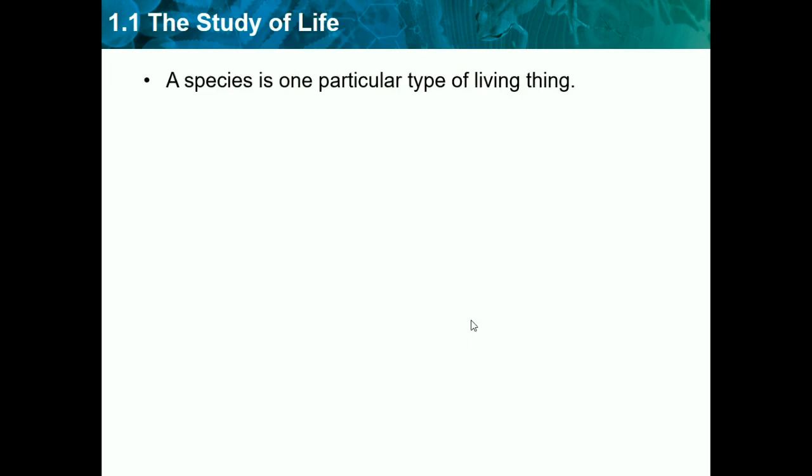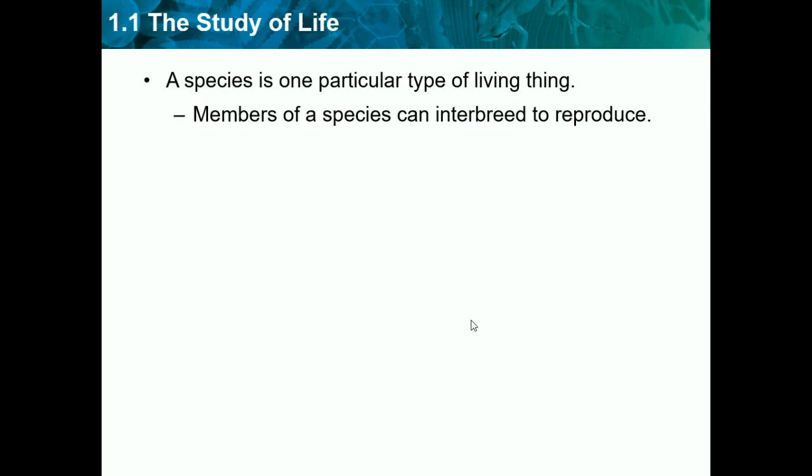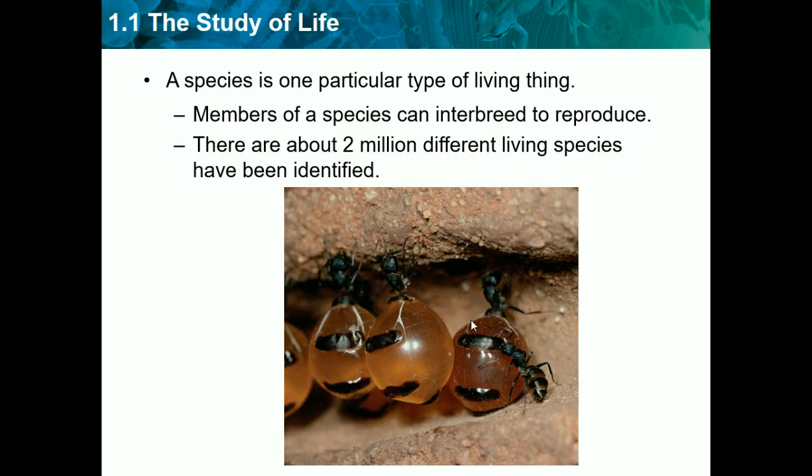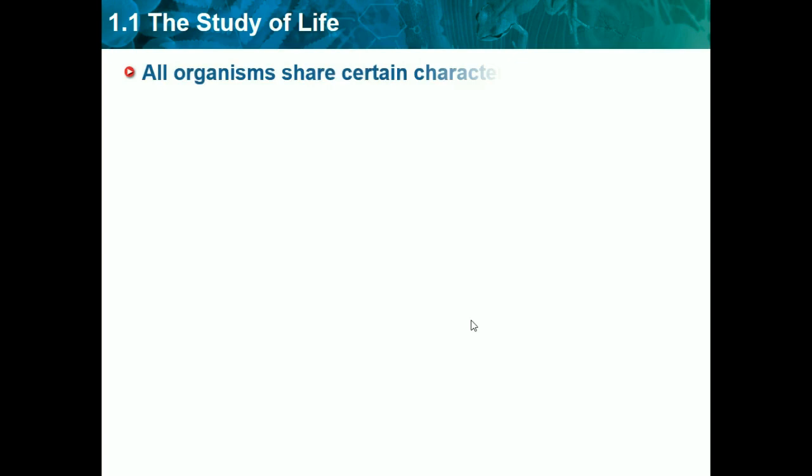A species is one particular type of living thing. Members of a species can interbreed to reproduce. So, if two animals can't reproduce together, then they're not part of the same species — like an elephant and a giraffe can't reproduce, that's why they're separate species. There are about two million different species that have been identified, but many of them are dying off due to extinction, which can lower our biodiversity.